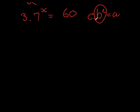Which means to solve 7 to the power of x, we're just going to divide with a 3 on both sides, and here we find 7^x is equal to 20.